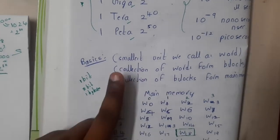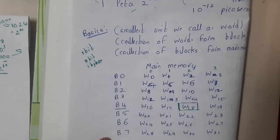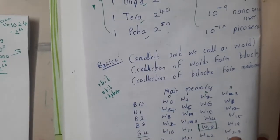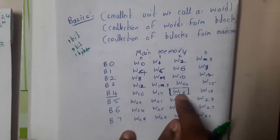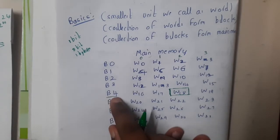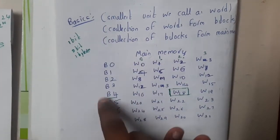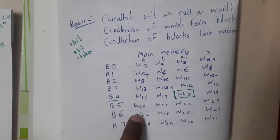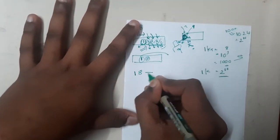To recap the structure: the smallest unit is one bit; combination of bits is a word; collection of words is a block; collection of blocks is main memory. Now let us understand one basic concept — how to find the location of a specific word. For example, where is word 18? By observation from the diagram, it is in block B4 at slot 2 (assuming slots 0, 1, 2, 3). But how does a computer know this? It uses binary.